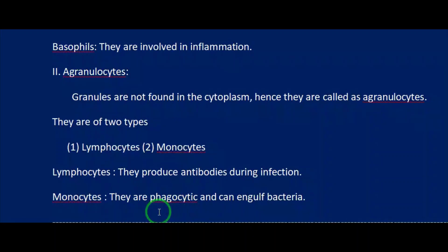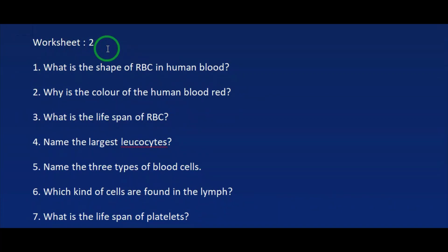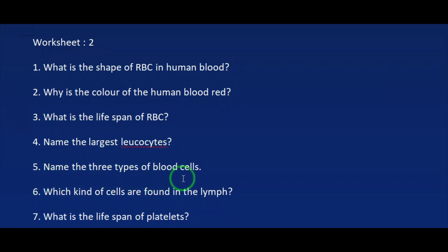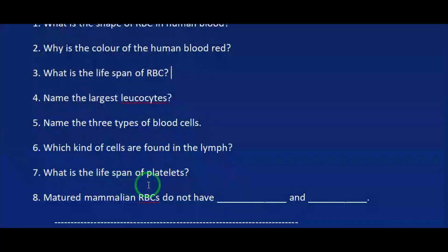The last video also had one answer — I hope you all have written it in the notebook. Write this question too and learn it. Additional questions: 1. What is the shape of RBC in human blood? 2. Why is the color of human blood red? 3. What is the lifespan of RBC? 4. Name the largest leukocyte. 5. Name the three types of blood cells. 6. Which kind of cells are found in the lymph? 7. What is the lifespan of platelets? 8. Matured mammalian RBCs do not have ___ and ___. Already I have taught this topic so you know all the answers — do it carefully and keep it with you.